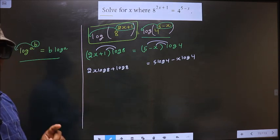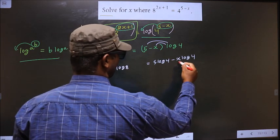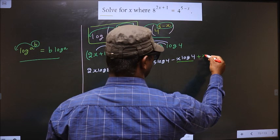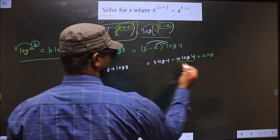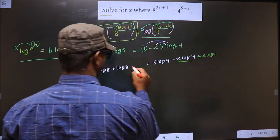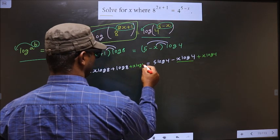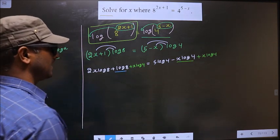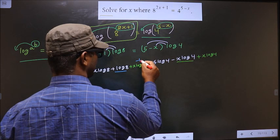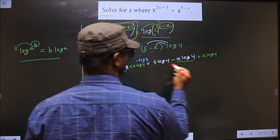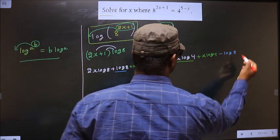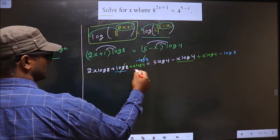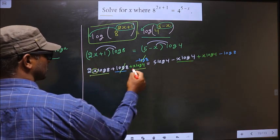Now all x terms go on one side and the remaining terms on the other. To remove minus x log 4 from the right, add x log 4 on both sides. Also, log 8 should not stay on the left, so subtract log 8 on both sides — log 8 cancels out.